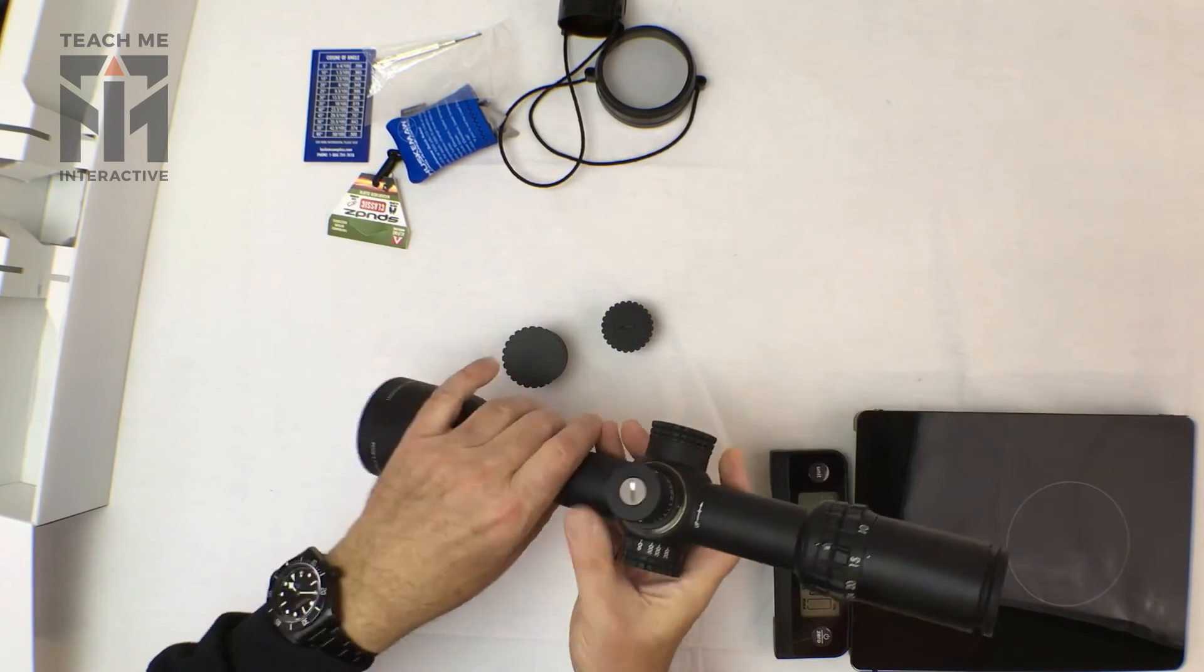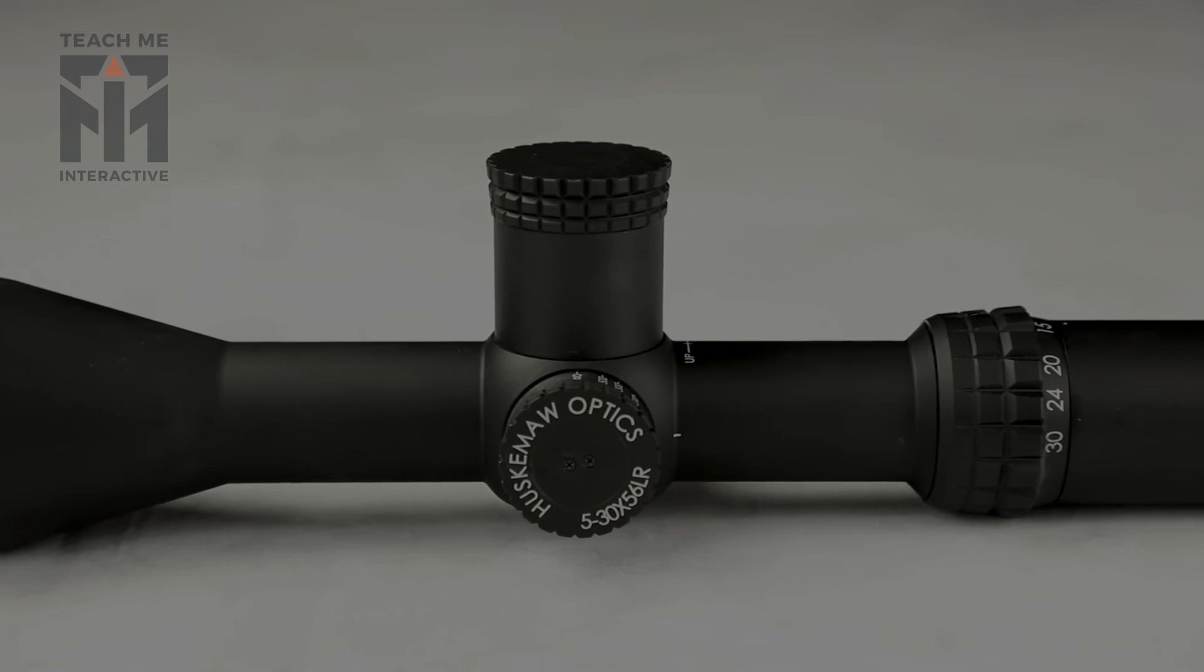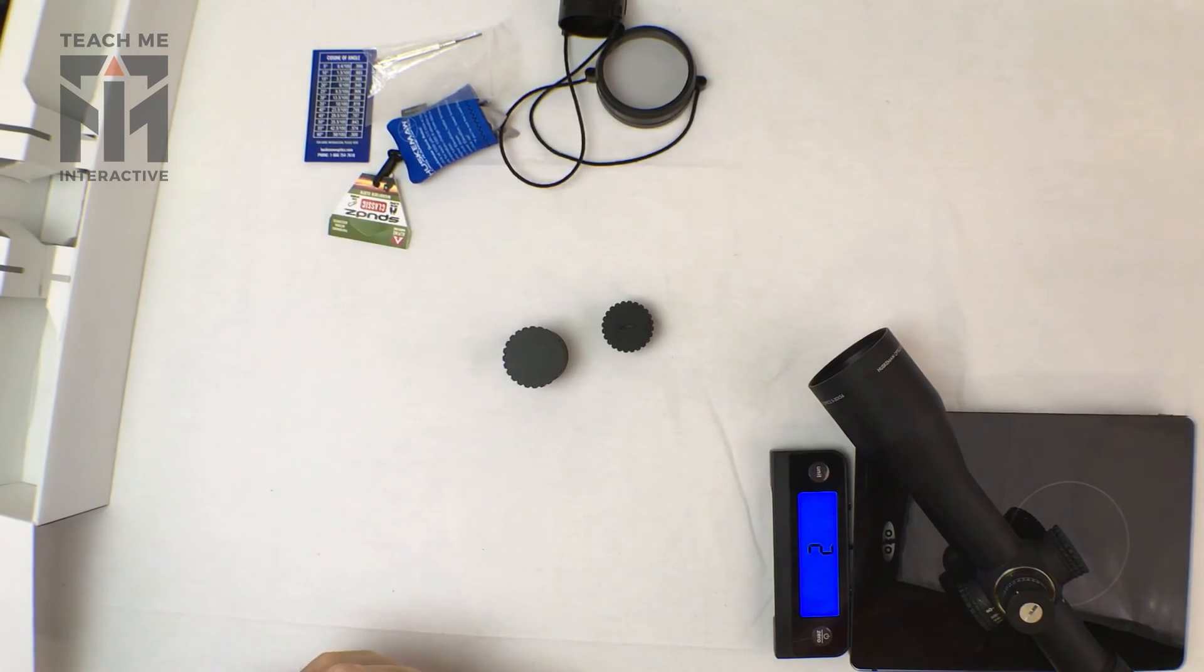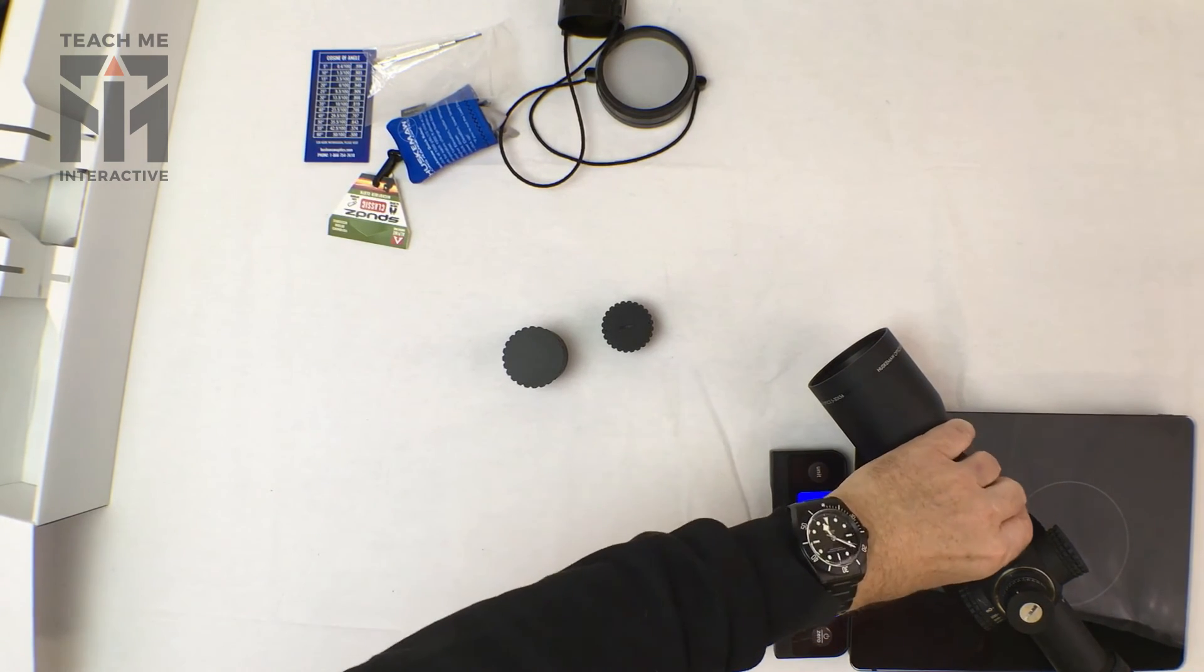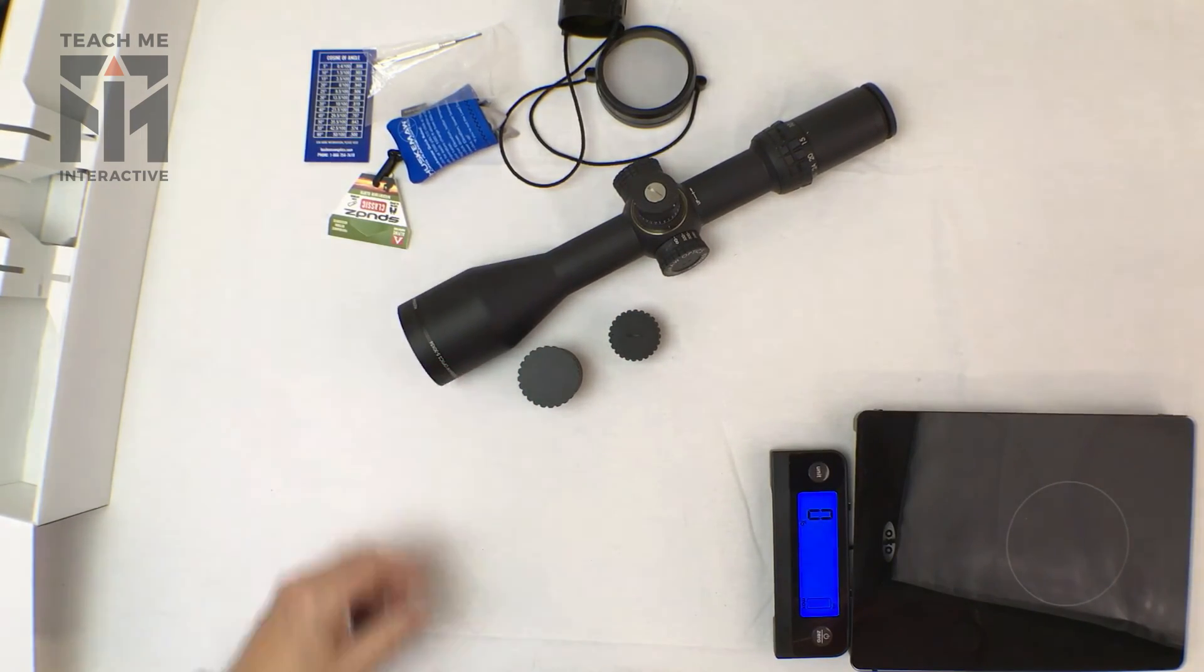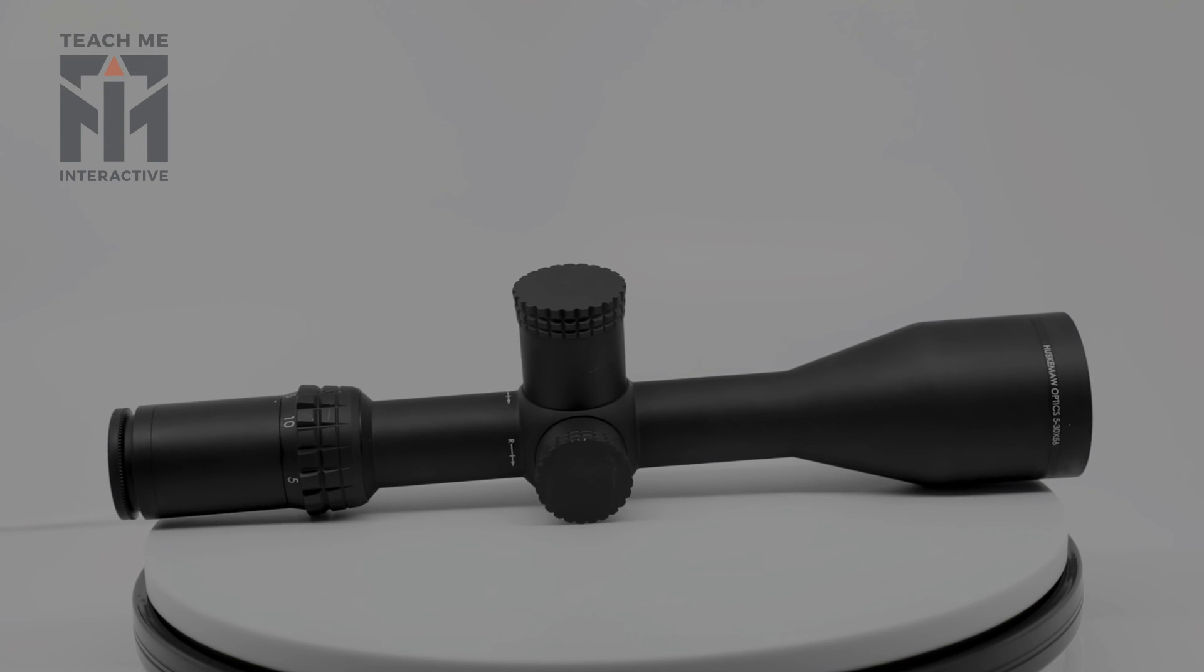So a solid feeling, feels like a well-made scope. You can see here it's made in Japan. Let's see how much this weighs. Two pounds, three ounces. So that's the scope by Huskemaw, long range 5 by 30 by 56 scope.